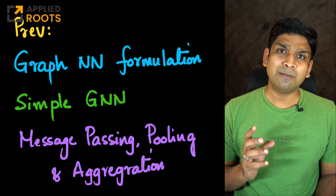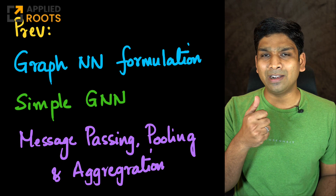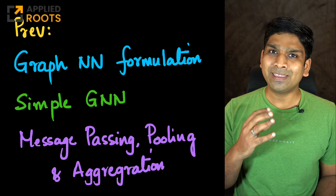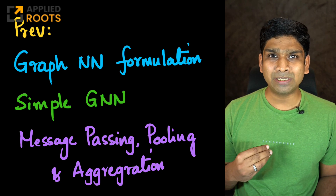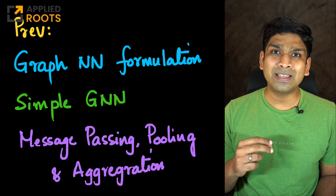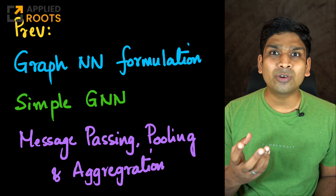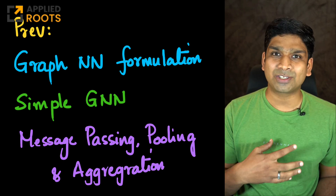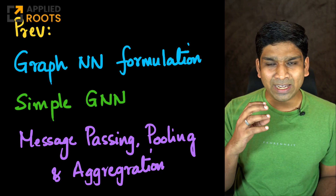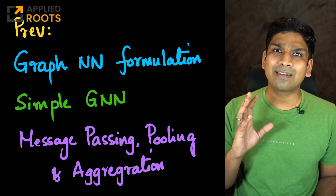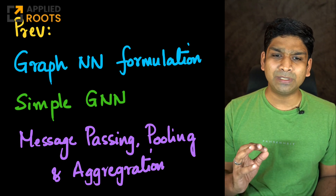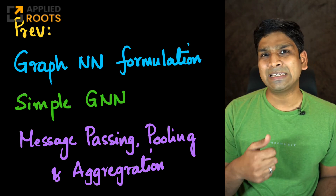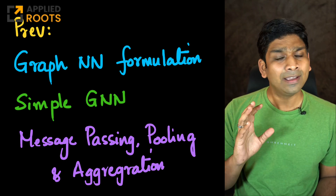Previously in part 1 of this live session, we first understood the formulation behind graph neural networks by taking some simple real-world examples and discussed the challenges of using a straightforward neural network like MLPs or CNNs for graph data structures. Then we built a very simple, basic graph neural network from first principles and understood the concepts of message passing, pooling, and aggregation very thoroughly.